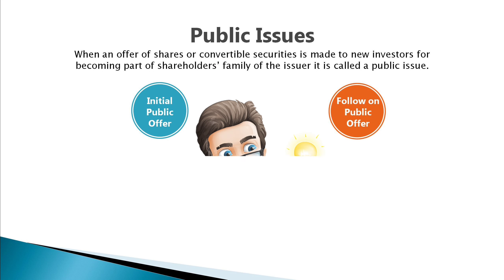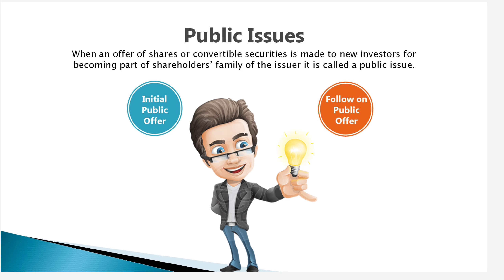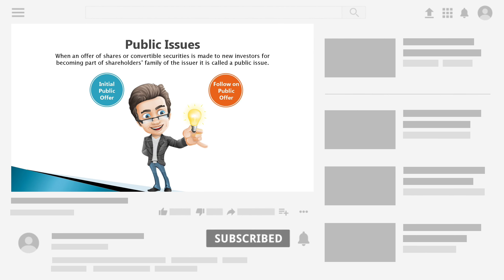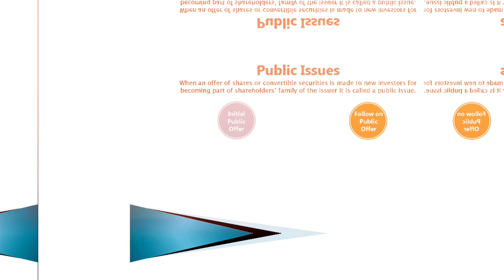Let's begin with public issues. When an offer of shares or convertible securities is made to new investors for becoming part of the shareholders' family of the issuer company, it is called a public issue. Public issues can thus be classified into Initial Public Offer and Further Public Offer.